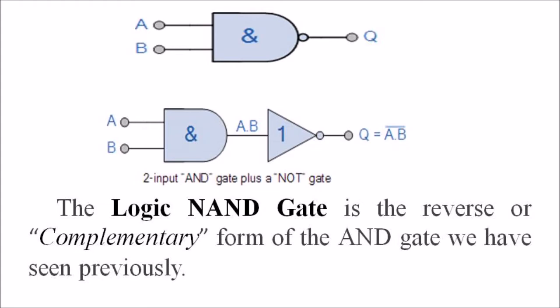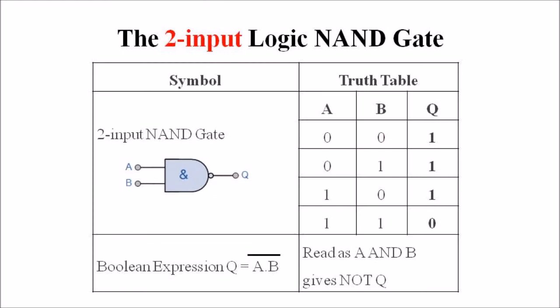In this lecture we are discussing two types of logical NAND gates. The first one is the two-input logic NAND gate. In this two-input logic NAND gate we can see two inputs, A and B, and Q is the output. The boolean expression is read as Q is equal to A dot B, the whole bar.